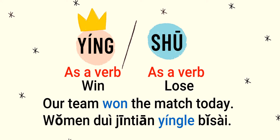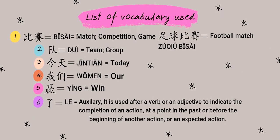Now let's go through the vocabulary list one by one. I hope the sentence and these words are clear. We are learning a word and its opposite: 'to win' and 'to lose.' The first item on the vocabulary list is bǐsài — a third and fourth tone combination — which means 'match,' 'competition,' or 'game.'